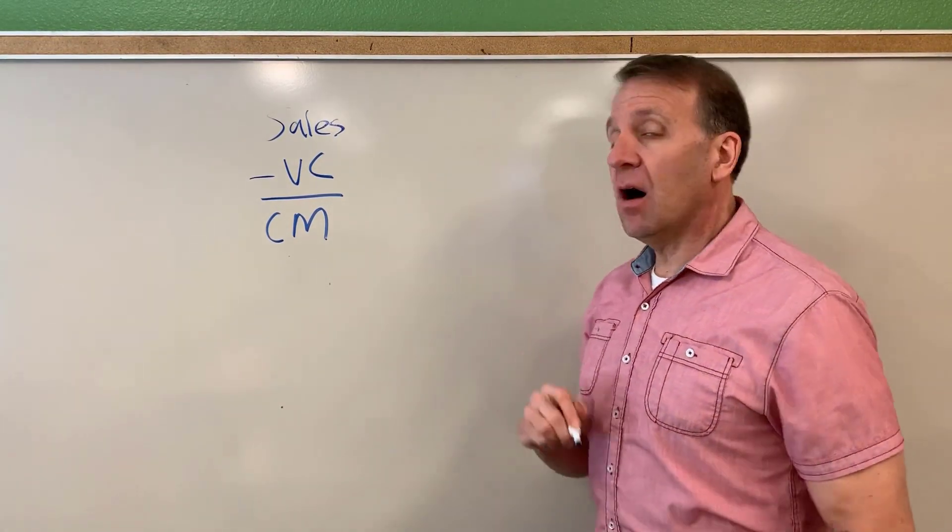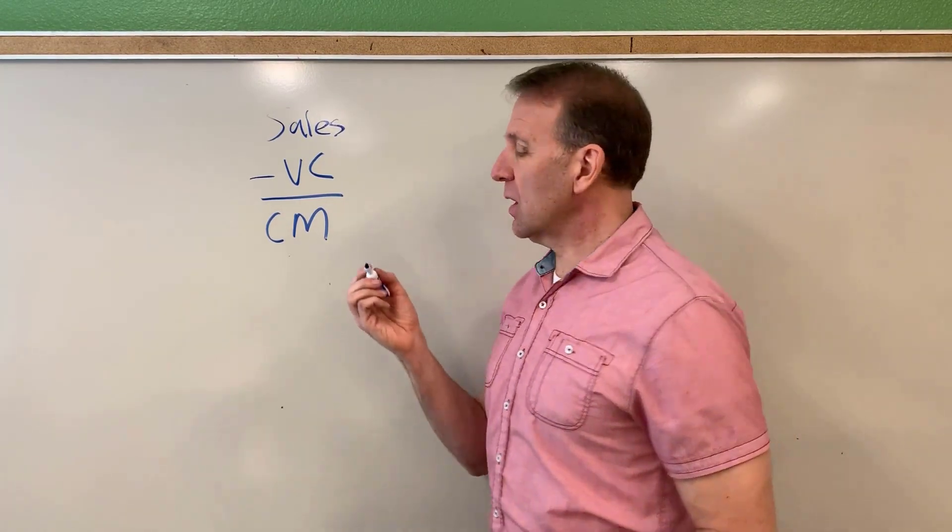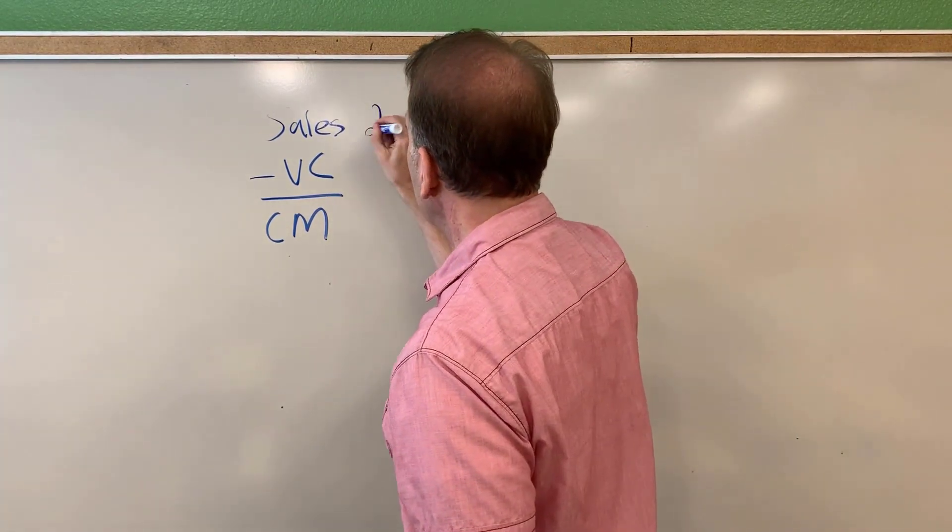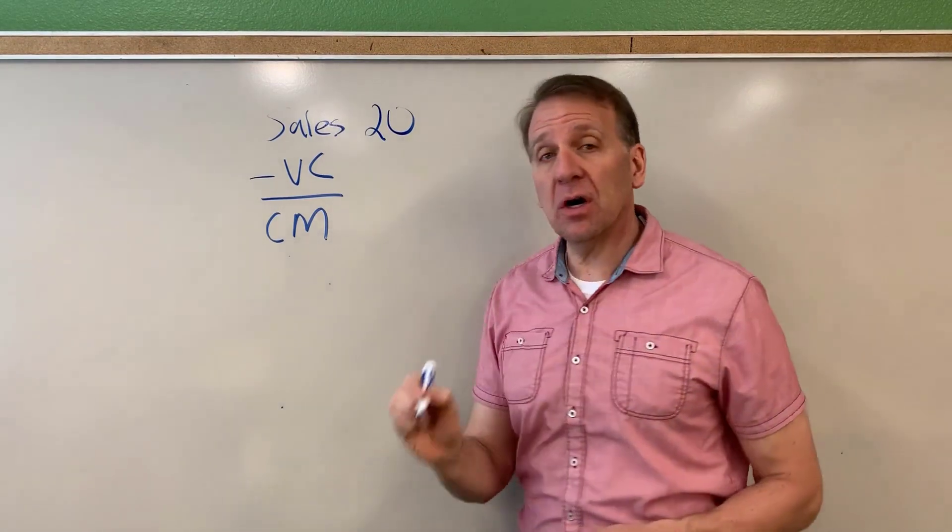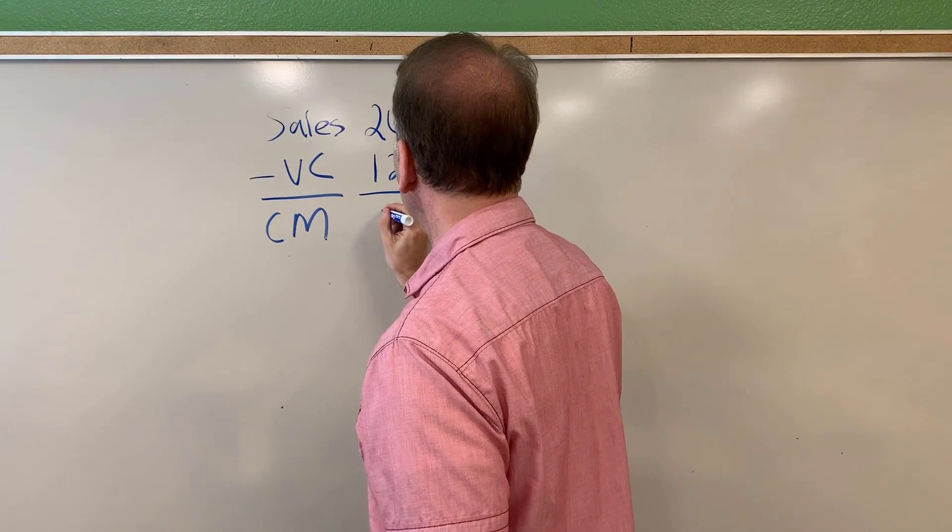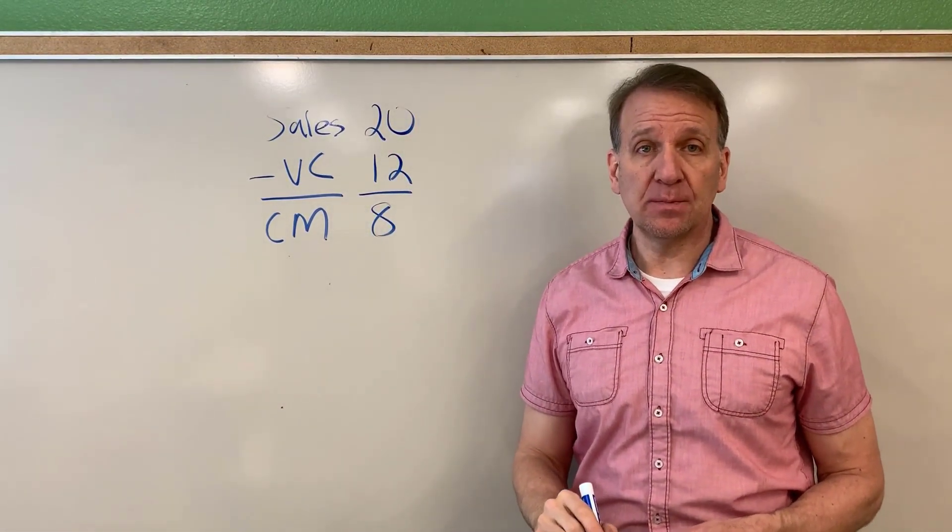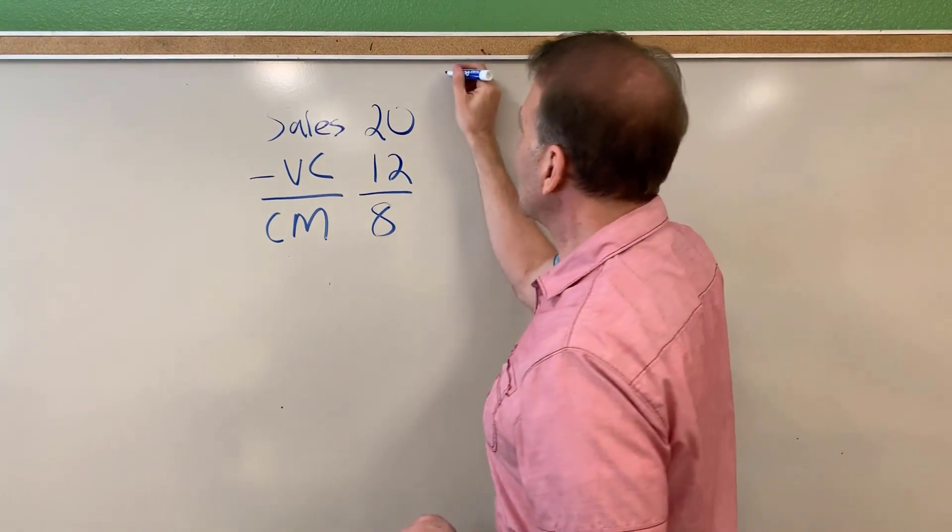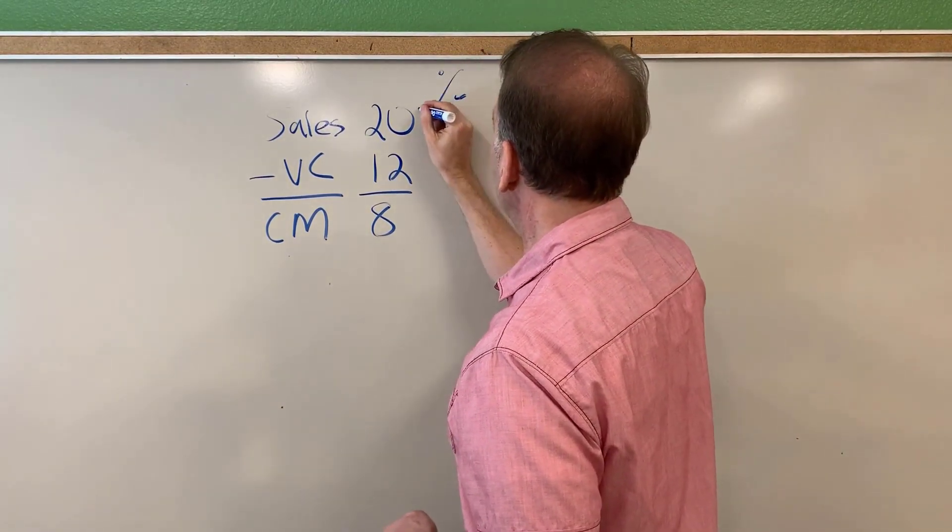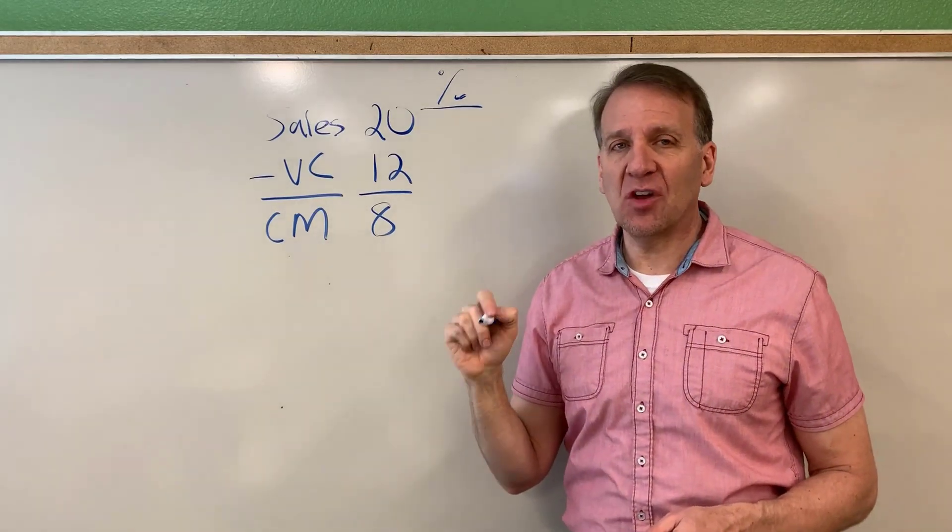In our example, in order to calculate breakeven, we're going to assume we're selling a soccer ball, and the selling price per soccer ball is $20, and the variable cost is $12. Then our contribution margin would be eight dollars. When we're doing these contribution margin income statements, oftentimes we'll do them in percentages also.